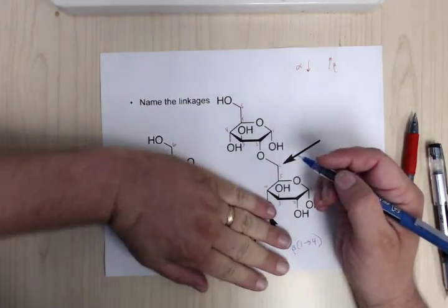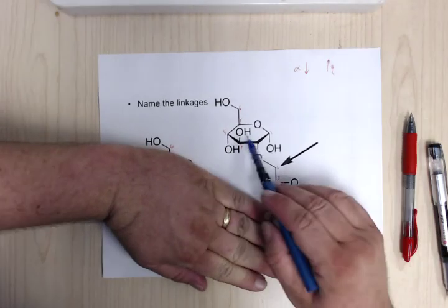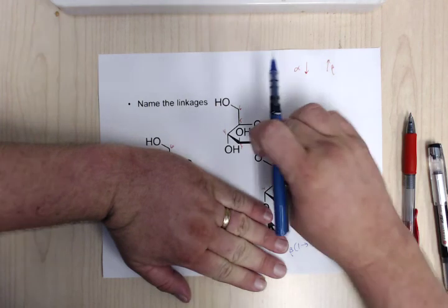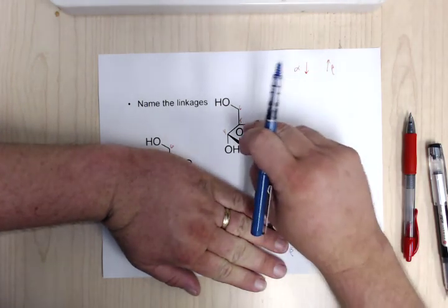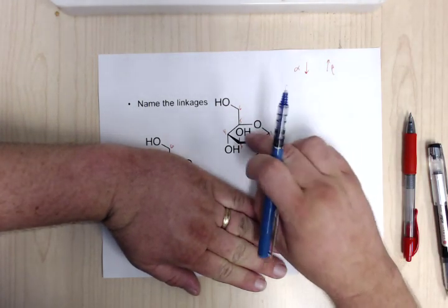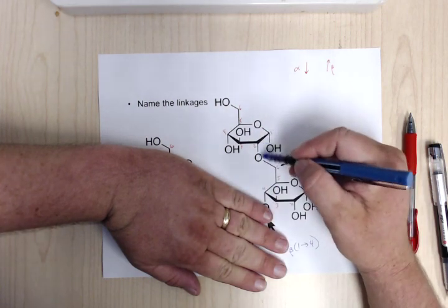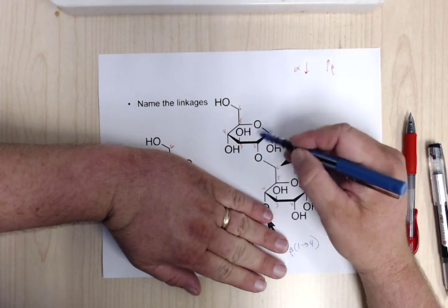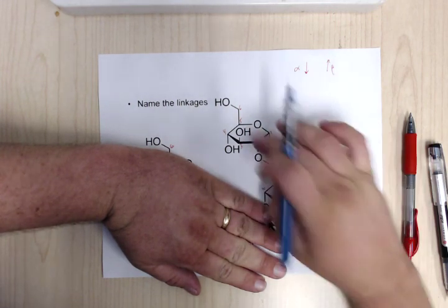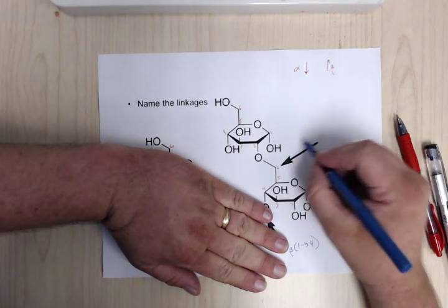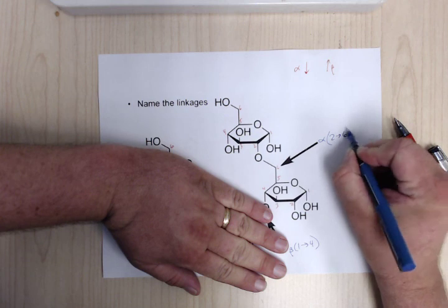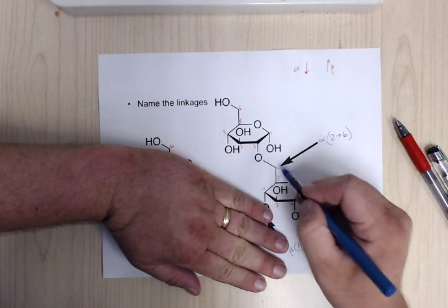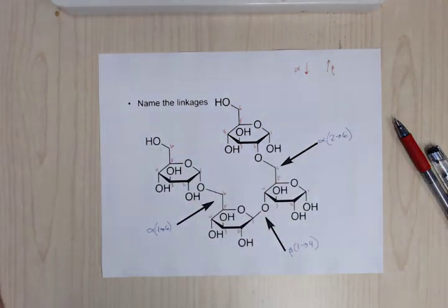For the second linkage, the bond from the left-hand sugar goes up, so it's beta — beta-1,4. For the third linkage, the left sugar's bond goes down, so it's alpha, connecting carbon one to carbon two — alpha-1,2. Good luck.